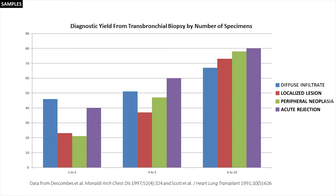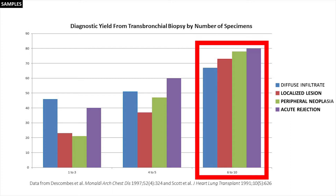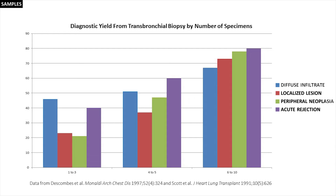The number of samples required to obtain a diagnosis varies depending on the underlying pathology. This graph demonstrates that the diagnostic yield is higher with more biopsy samples, and that 6 to 10 samples gives you around a 70% diagnostic yield. Even with perfect technique, a number of samples often contain little alveolar parenchyma. Therefore, it makes sense to take at least 6 samples.